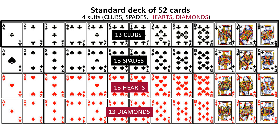A standard deck of cards has four suits. They're called clubs, spades, hearts, and diamonds. The clubs and the spades are the black cards, and there are 13 of each. And the hearts and the diamonds are the red cards, and there are 13 of each of those. And 13 times 4 is 52.